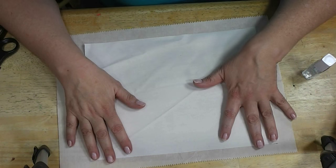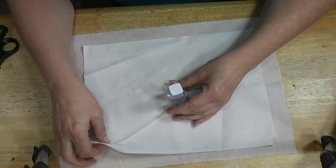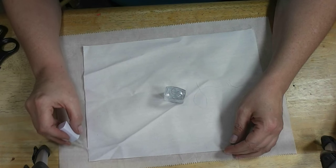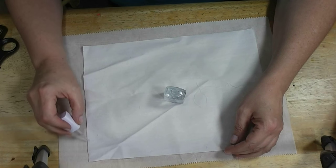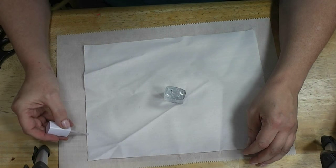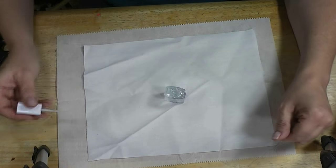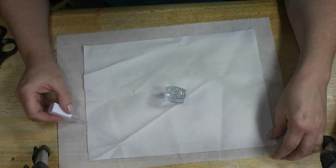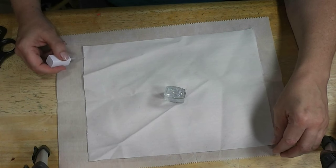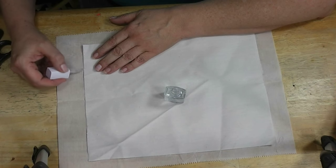We're going to seal the edges with any clear nail polish because this stuff wants to unravel really, really bad. And I don't want to have to sit here and sew it or put a hem in it. You could run a bead of like a really thin glue, but it's quick to just run the nail polish. I've got it sitting on a piece of parchment paper from the kitchen. I love having parchment paper for my craft room.